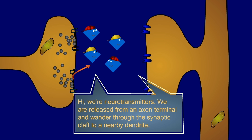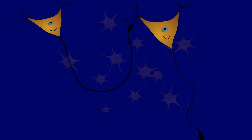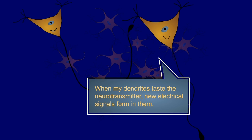Hi, we're neurotransmitters. We are released from the axon terminal and wander through the synaptic cleft to a nearby dendrite. When my dendrites taste the neurotransmitter, new electrical signals form in them.